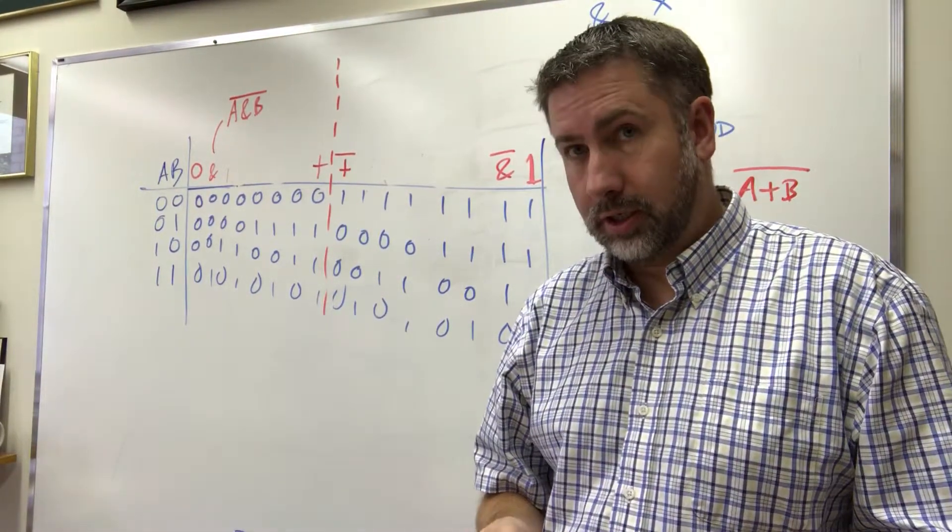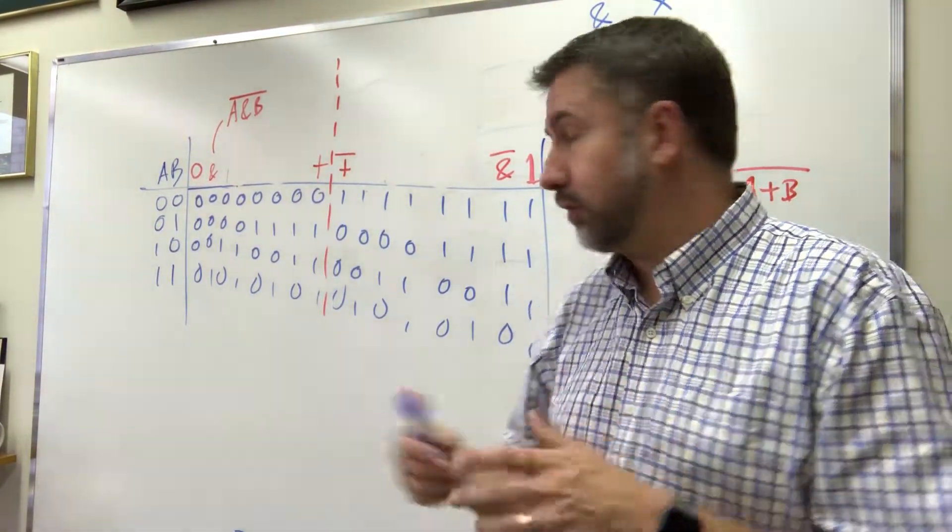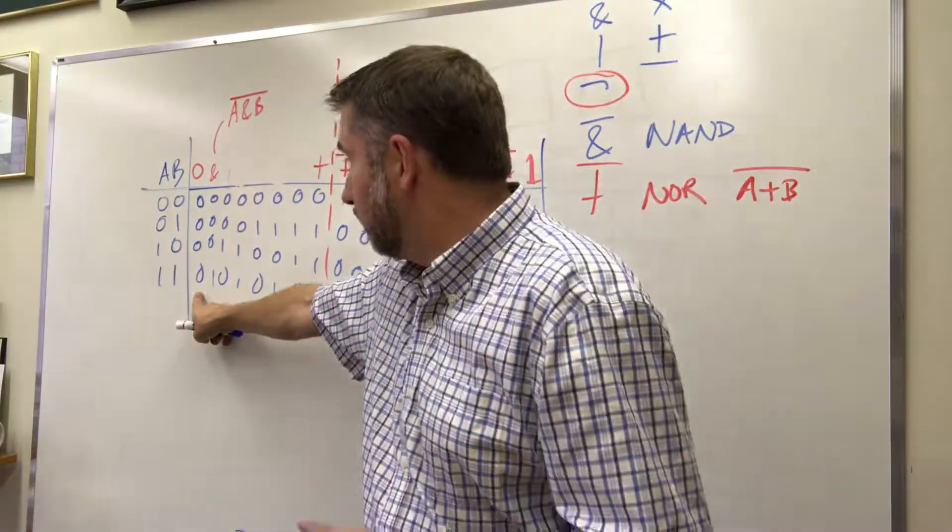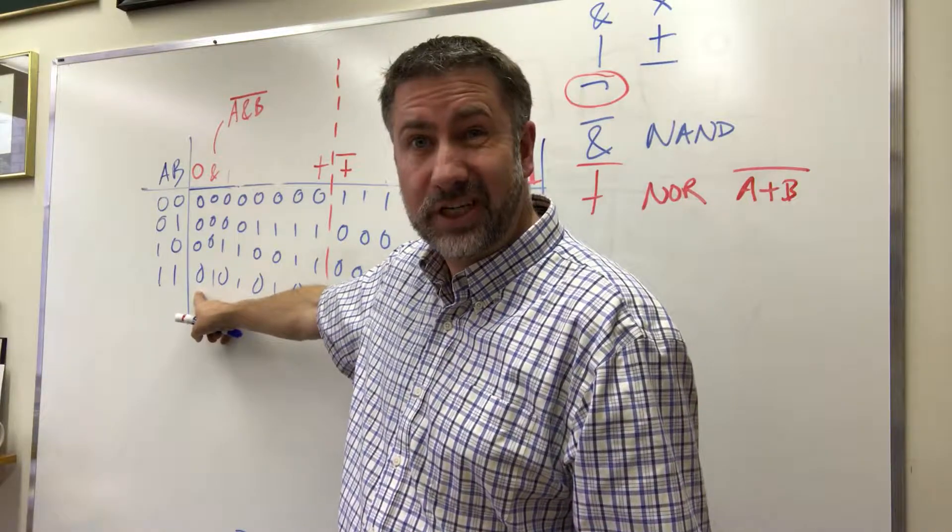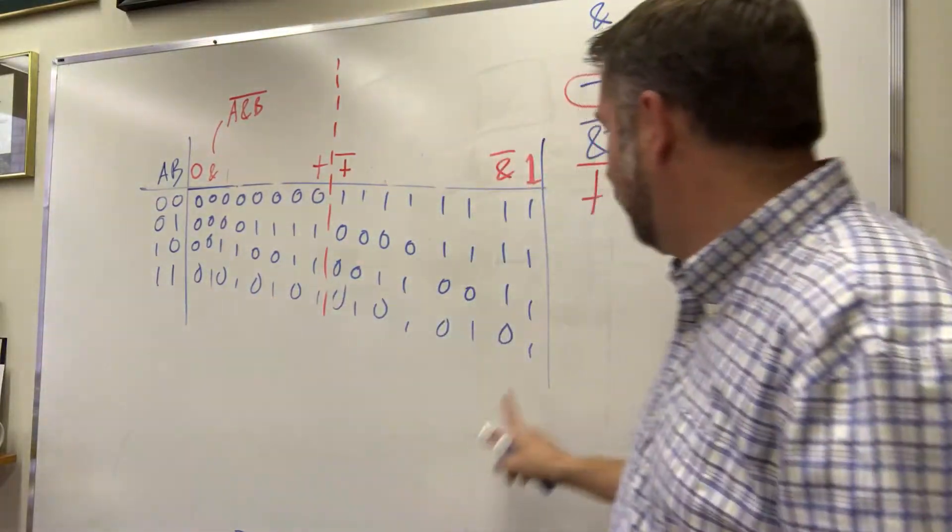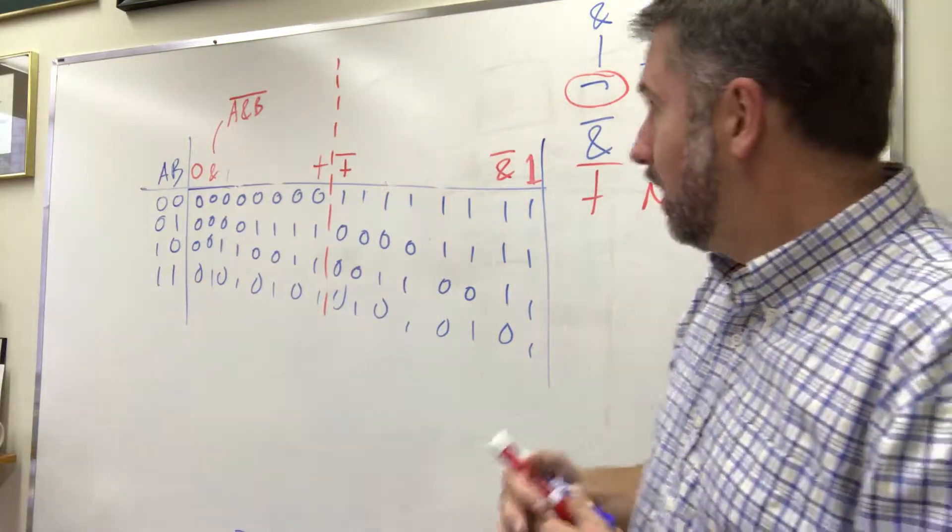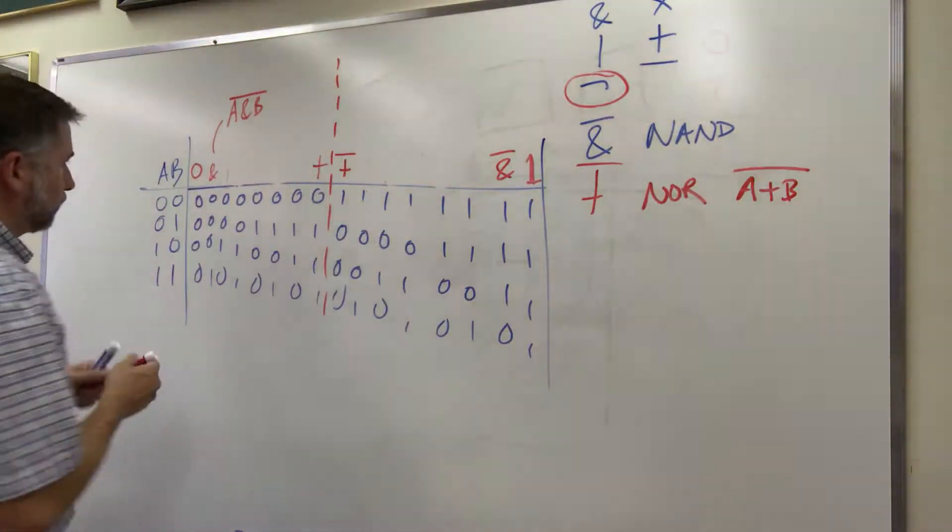So there's a few other functions that are useful that we can pull out. First we're going to identify a few that aren't that useful. We've already identified 0 being a function of two variables that doesn't actually do anything, and 1 also being a function of two variables that isn't actually that useful. There are a few more in here that aren't that useful.